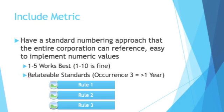It's important to note with FMEAs: always include a metric on every FMEA you do, and it's good to have a standard numbering approach that the entire company uses. It's also good to have easy-to-implement numeric values. For your scales, 1 to 5 works best, because there's less arguing amongst the scores. If you have 1 to 10, people can argue whether something is a 7 or an 8. With a 1 to 5, there will be a lot less arguing. But in general, if you have really good definitions of what a score means, there won't be much arguing. So make your standards as relatable as possible.